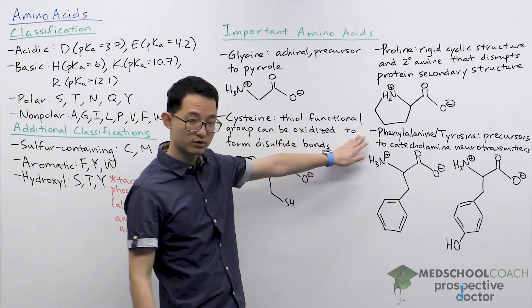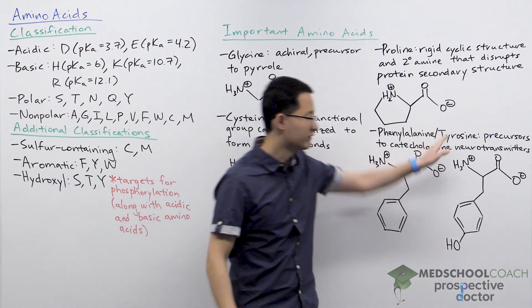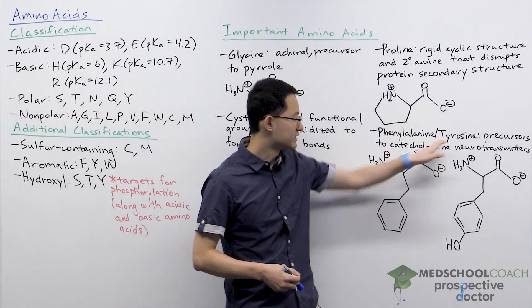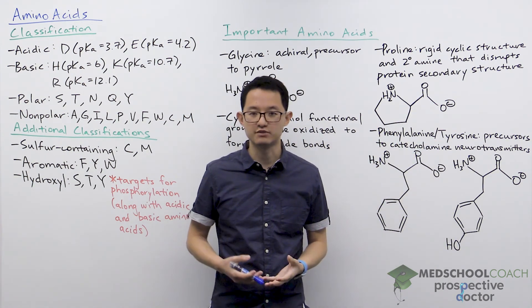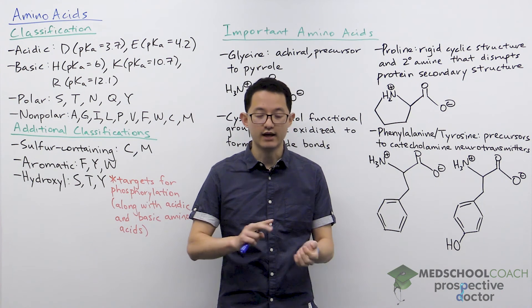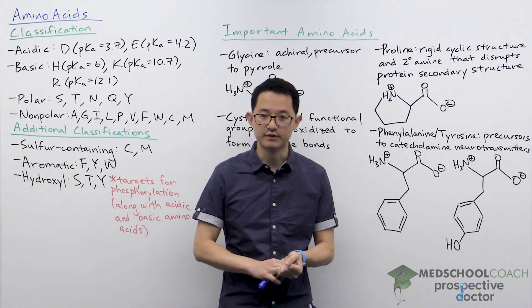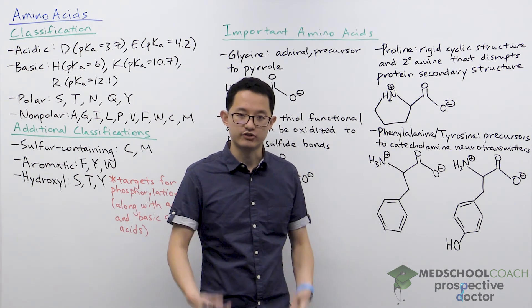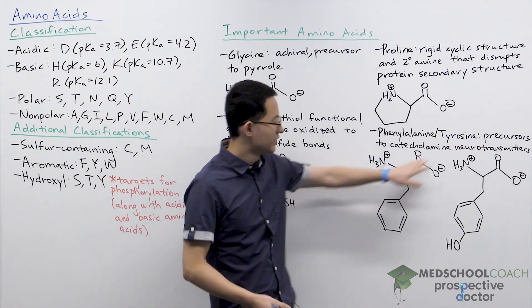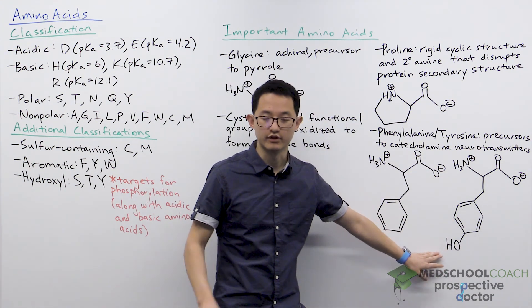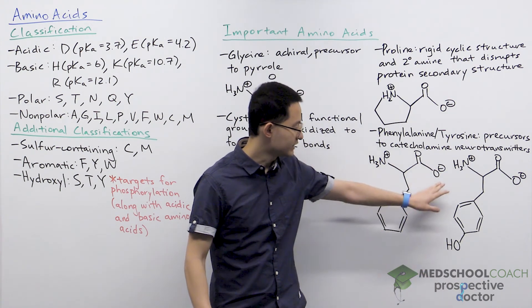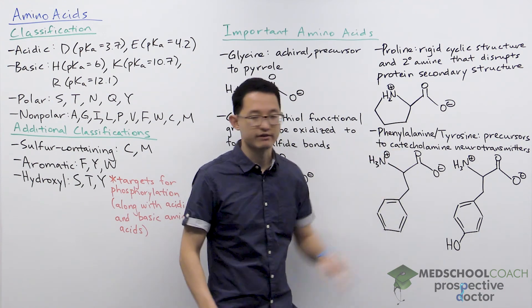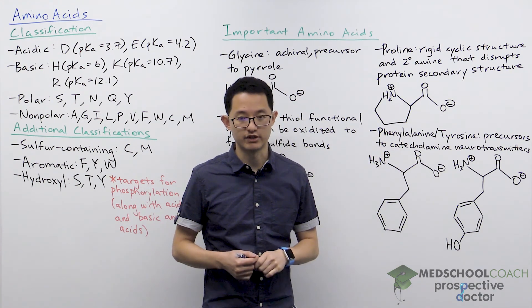The last important amino acids are phenylalanine and tyrosine. These are important biologically because tyrosine is the precursor to the catecholamine neurotransmitters, including dopamine, norepinephrine, and epinephrine. While tyrosine is the direct precursor for those catecholamine neurotransmitters, tyrosine itself is made from phenylalanine — so technically phenylalanine and tyrosine are both precursors for those different neurotransmitters.